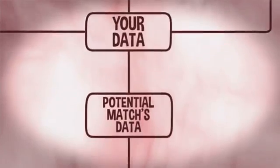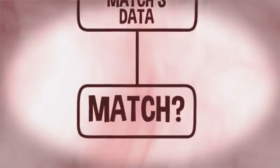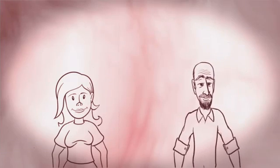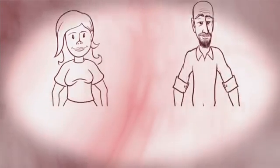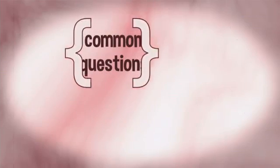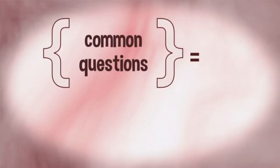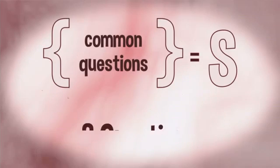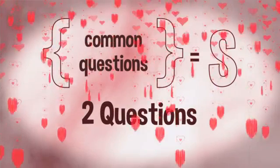With all this information, OkCupid can figure out how well two people will get along. The algorithm crunches the numbers and gives us a result. As a practical example, let's look at how we'd match you with another person — let's call him B. Your match percentage with B is based on questions you've both answered. Let's call that set of common questions S. As a very simple example, we'll use a small set S with just two questions in common and compute a match from that.